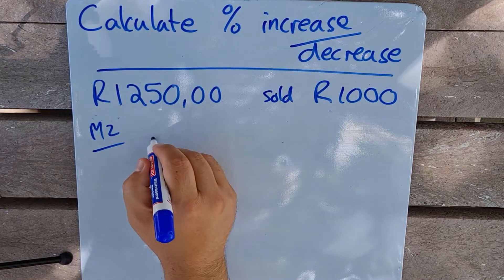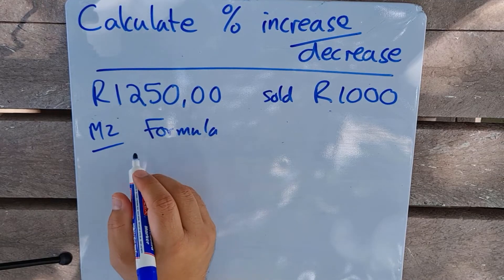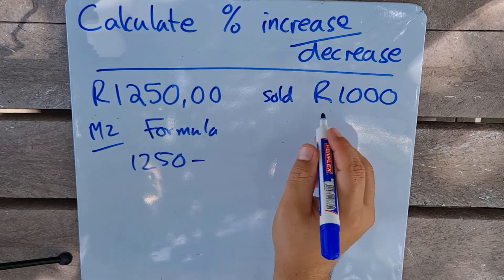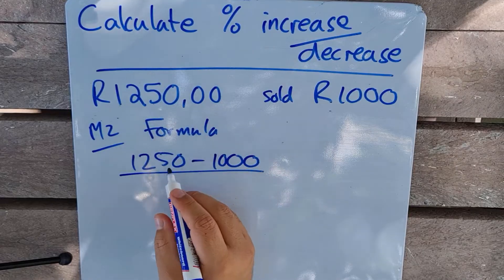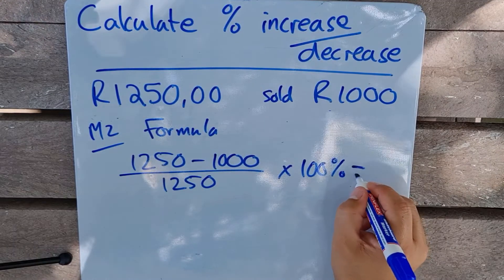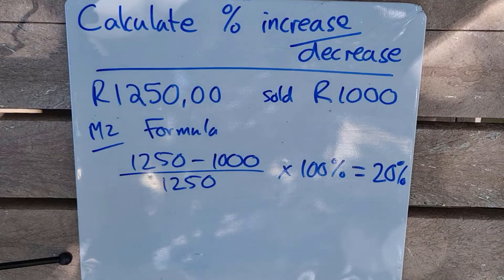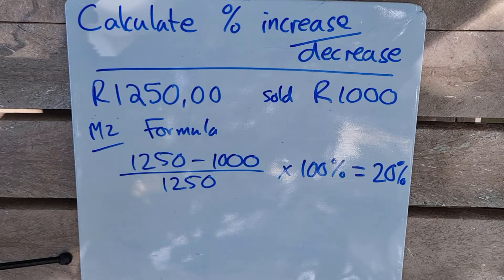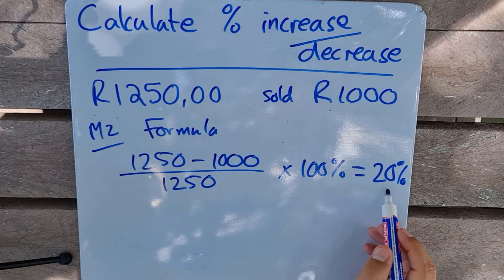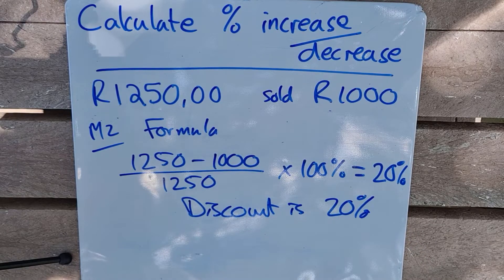Method 2 uses a formula. We take the largest amount 1250, subtract the amount it was sold for, divide by the original amount 1250, and multiply by 100 percent. That gives us 20 percent — so the discount is 20 percent.